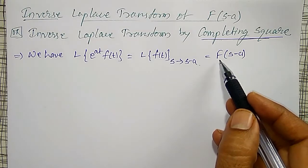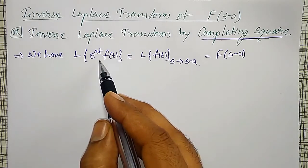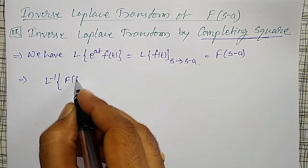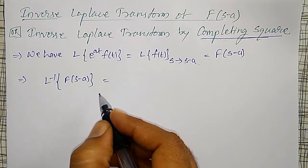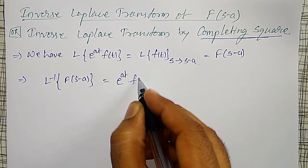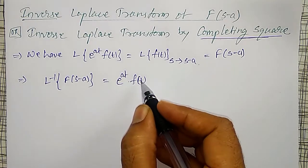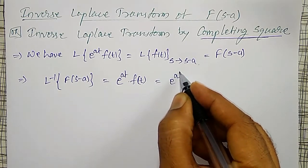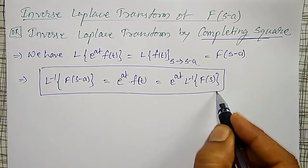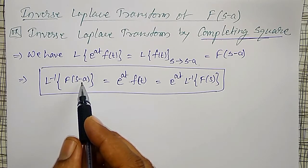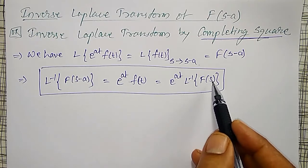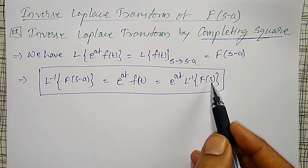But if we are given F of s minus A and want to find its Inverse Laplace Transform, then the Inverse Laplace Transform of capital F of s minus A equals e to the power at into F of t, where F of t is the Inverse Laplace Transform of F of s. So whenever we find the Inverse Laplace Transform of F of s minus A, we multiply by e to the power at and find the Inverse Laplace Transform of F of s, replacing s minus A back by s.